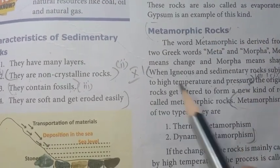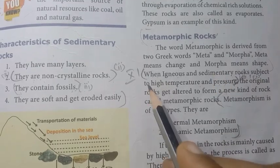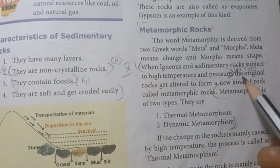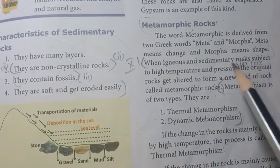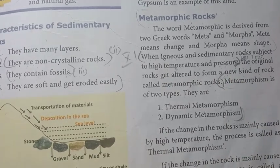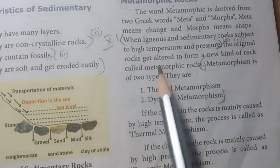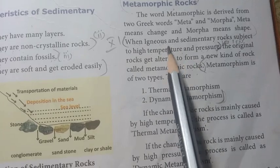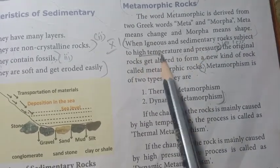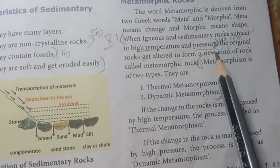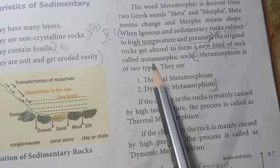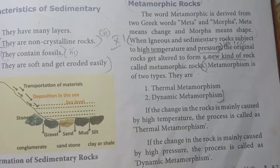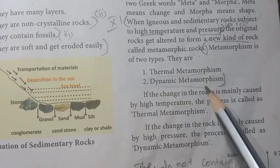Metamorphic rocks: when igneous and sedimentary rocks are subjected to high temperature and pressure, the original rocks get altered to form a new kind of rock called metamorphic rocks. Types include thermal metamorphism and dynamic metamorphism.